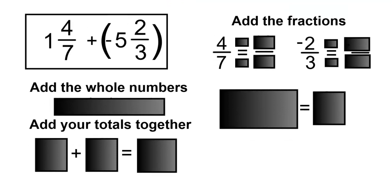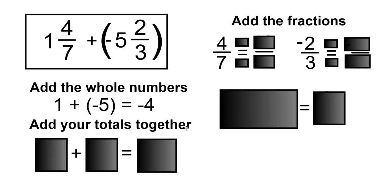For the next example, we have 1 and 4 over 7 plus negative 5 and 2 over 3. Start by adding the whole numbers together. So 1 plus negative 5 is equal to negative 4.